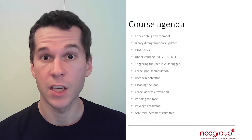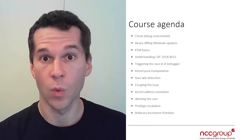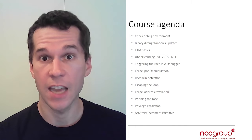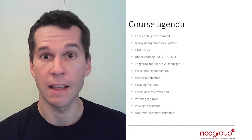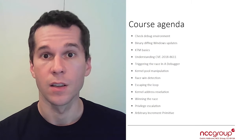Finally, we will show how to build an arbitrary read-write primitive to exploit the vulnerability. At the end of this course, the goal is to have a working exploit on Windows 10 1809 that allows you to elevate privileges for your own process to SYSTEM.